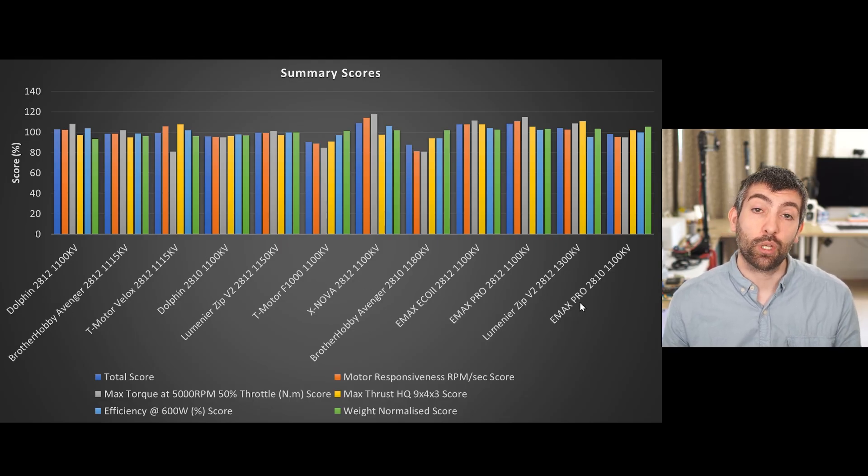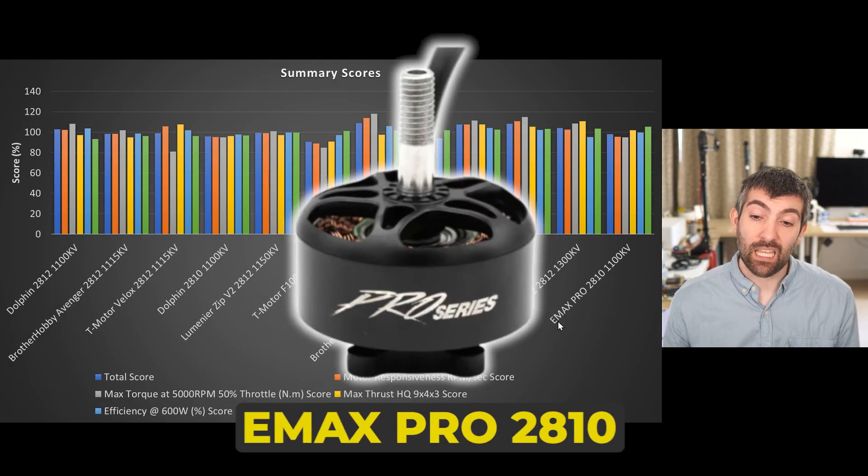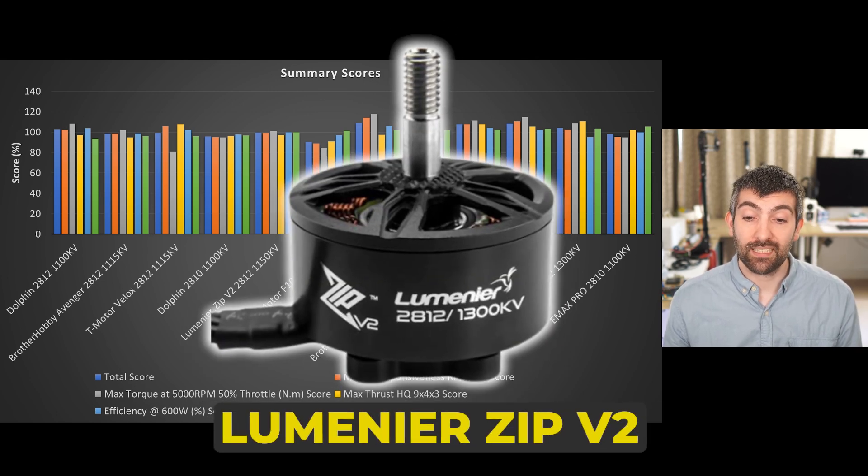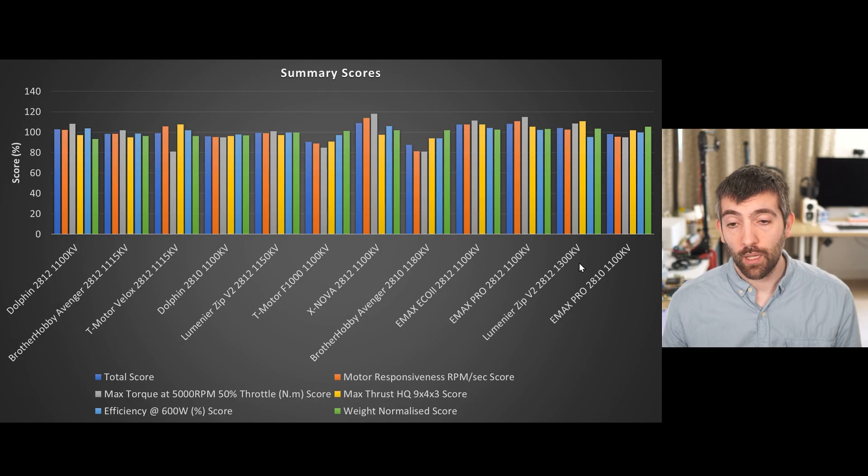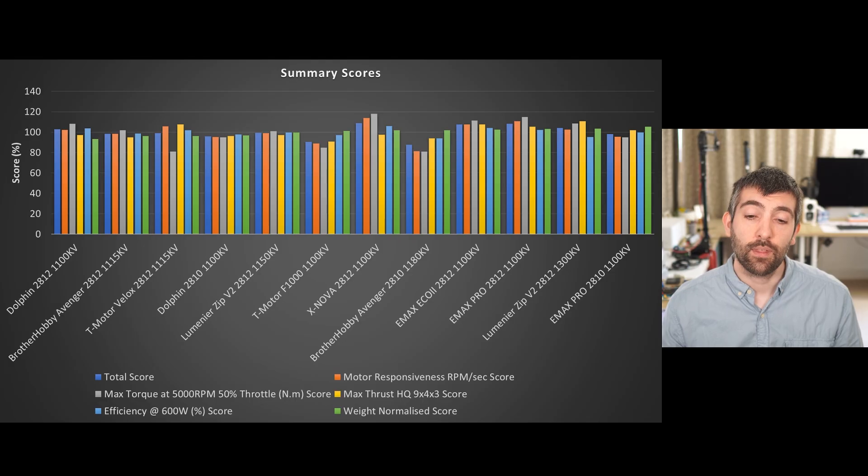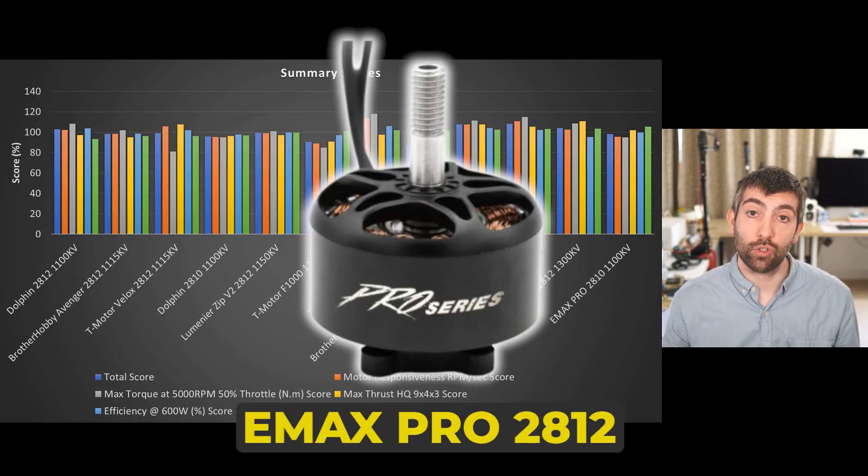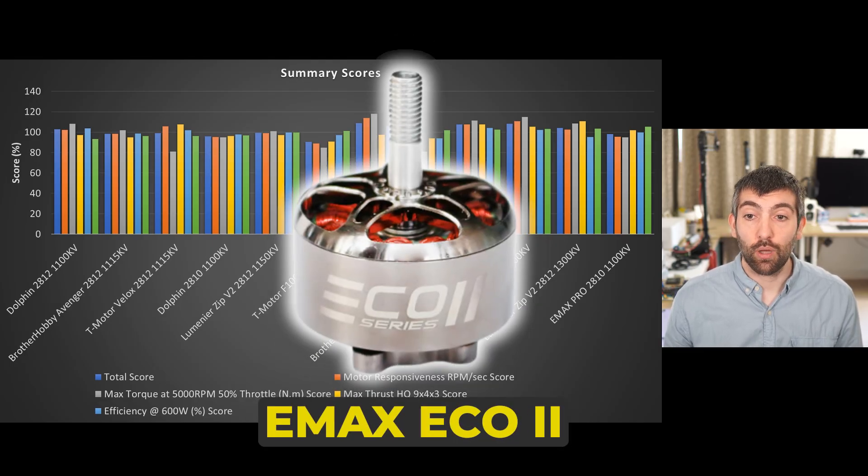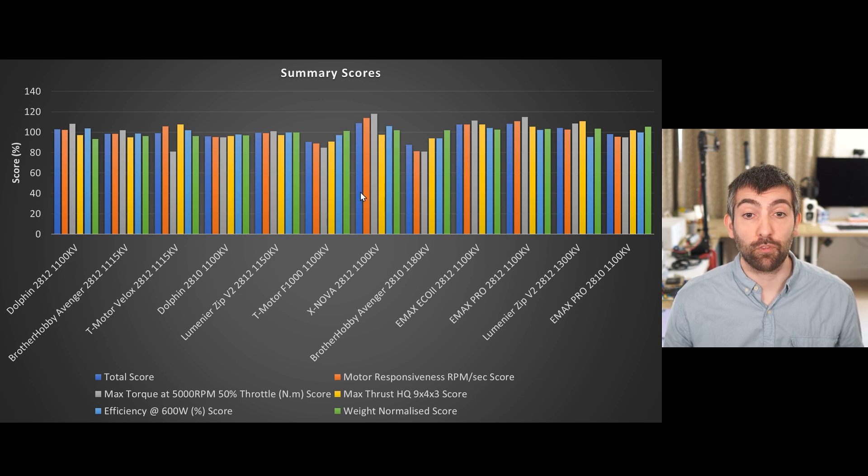These motors are ordered in terms of weight normalized score, so you can see that the Emax Pro 2810 actually comes out the best overall when you take into account the weight of the motor. Then it's the Lumineer Zip V2 2812 1300 kV which does really well in terms of maximum thrust. It's quite a lightweight motor but it loses out on efficiency. The Emax Pro does really well across the board. It is a little bit of a heavier motor and it didn't come top in any of the tests but performed near the top for all of them, which is really good for an all-round choice. The Emax Eco 2, really a great budget option because it's performing really well. It came in fourth despite being the cheapest motor that I tested, so if you're looking for value that's a great place to start.